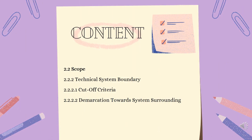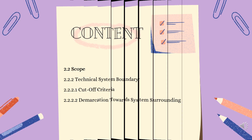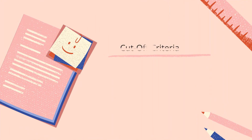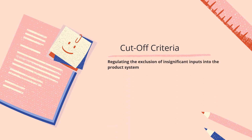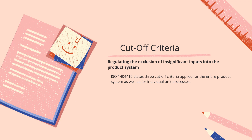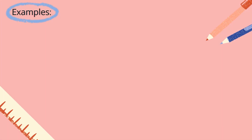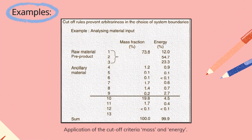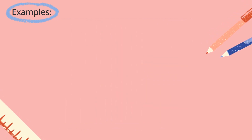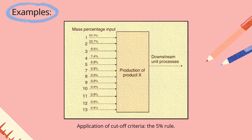Next, we will cover the technical system boundary, divided into two: Cut-off Criteria and Demarcation Towards System Surrounding. The specification of system boundaries is one of the most important steps in an LCA. The necessity for cut-off criteria, regulating the exclusion of insignificant inputs into the product system, ISO 14044 states three cut-off criteria applied for the entire product system as well as for individual unit processes, which are: mass, energy, and environmental relevance. An example of the application of the cut-off criteria includes mass and energy, and the 5% rule.